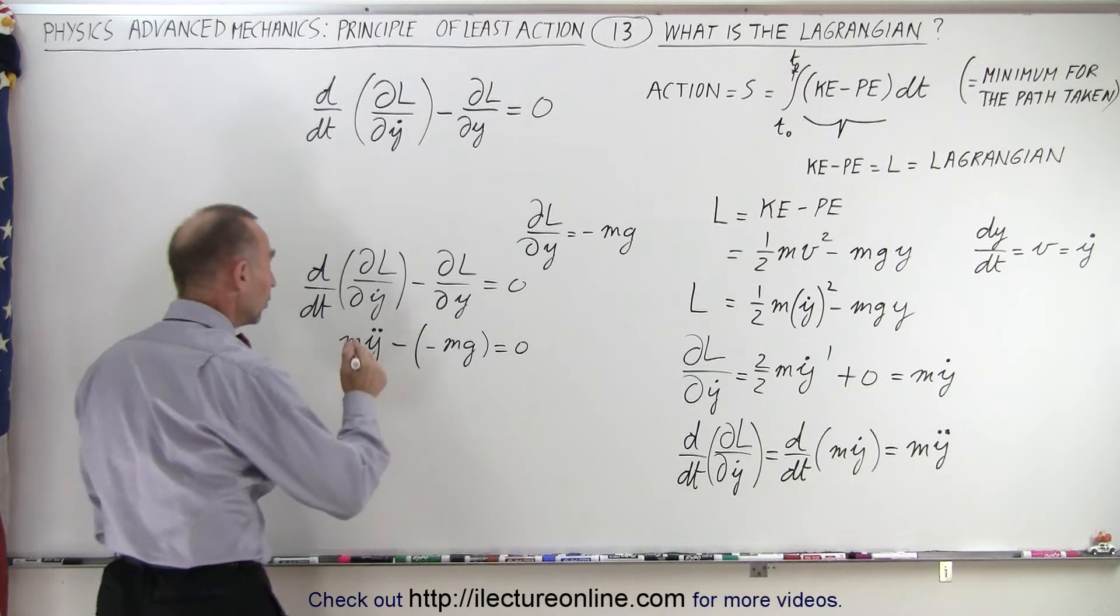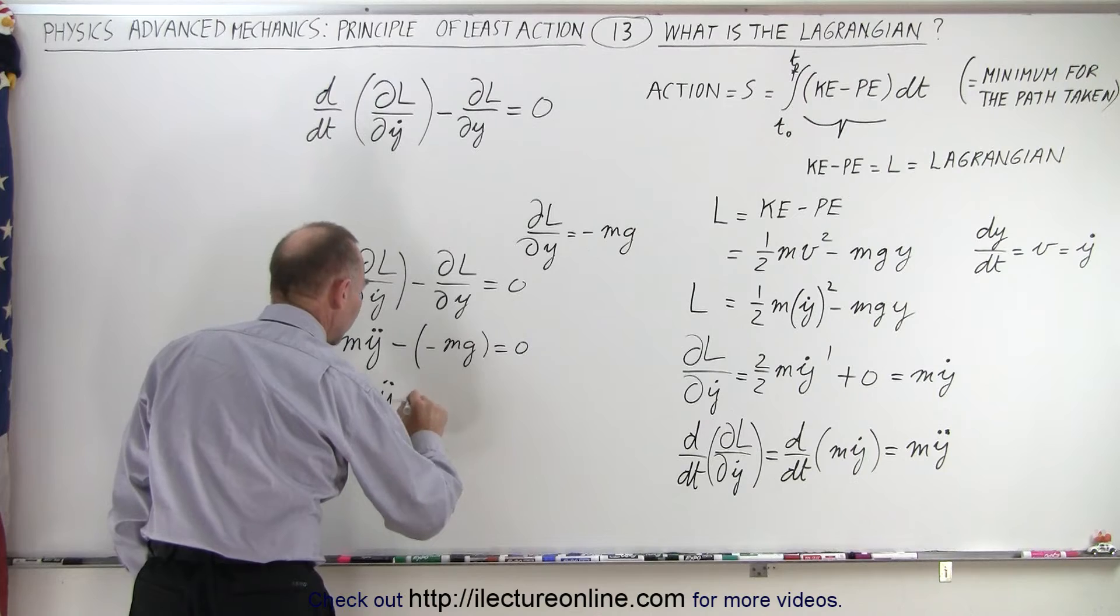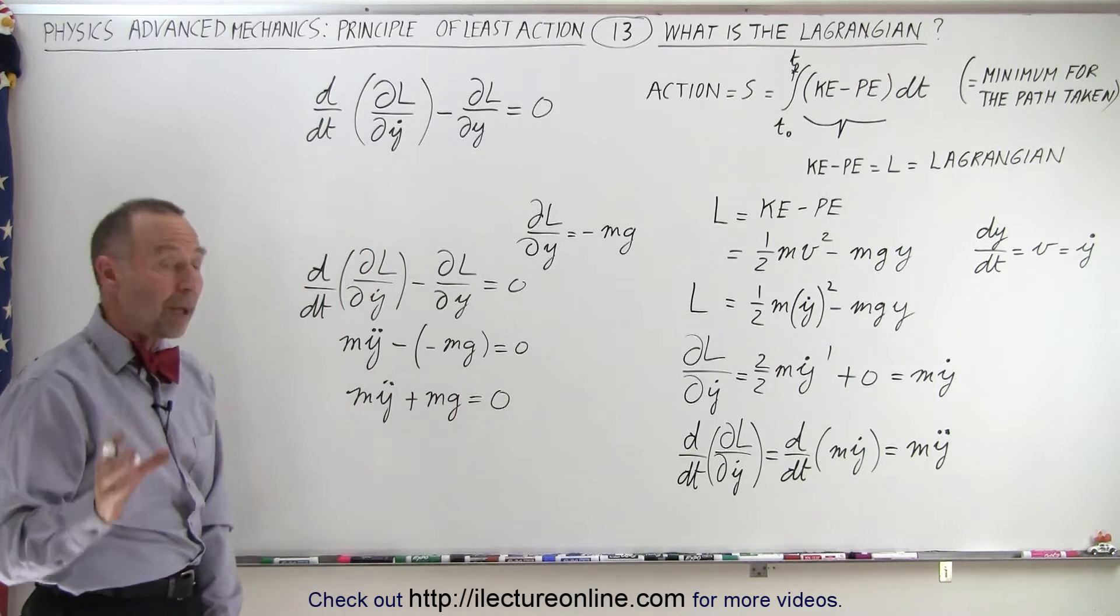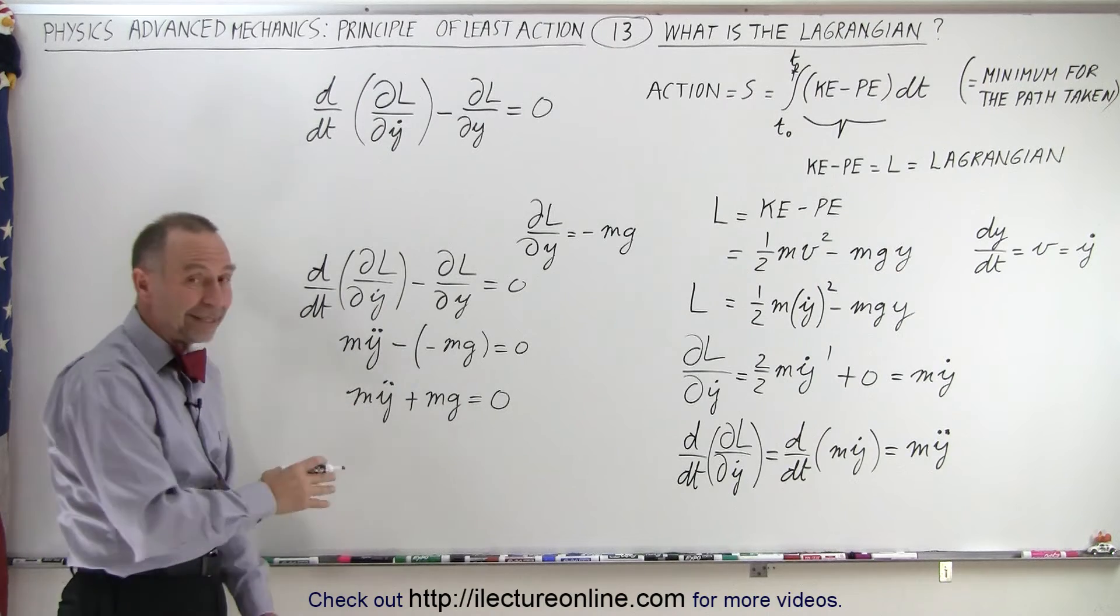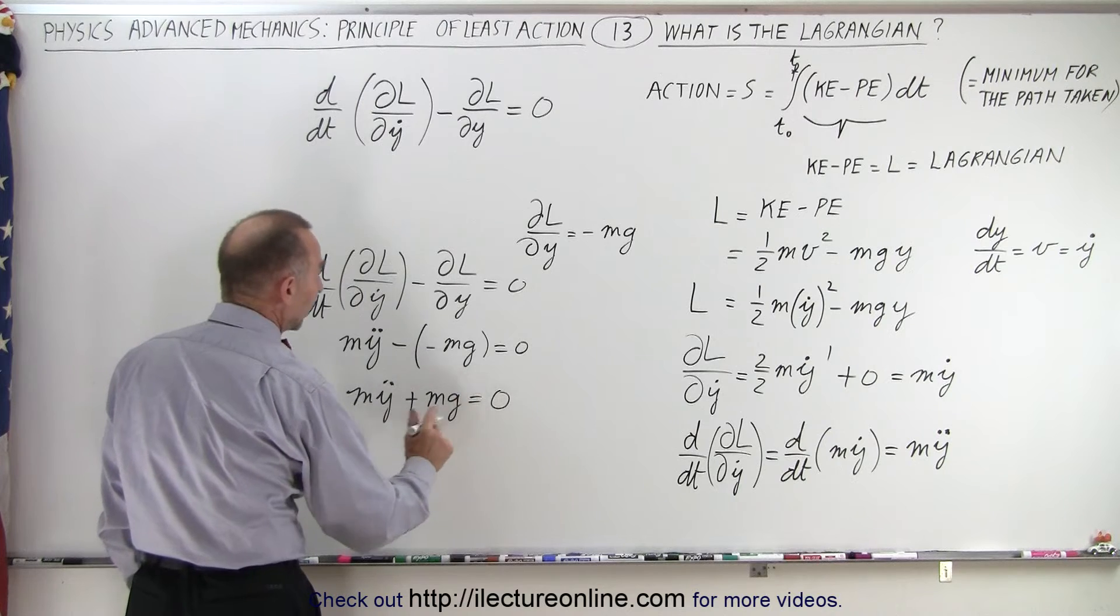Okay, so this becomes m y double dot plus mg equal to zero, and then of course remember that y double dot is simply the acceleration, and mg, well, let's see here. We can move that to the other side.